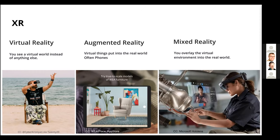VR is where you put yourself inside a virtual environment. AR is where you put the virtual environment into the real world — kind of like how IKEA does it with their placement tool — and it's fairly common now; you can use your phone. MR is where you basically combine VR and AR and create a world within our world. That's becoming more common now that tools like the Microsoft HoloLens are available.